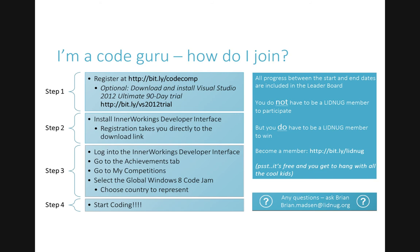Step one: register at bit.ly/codecomp. If you don't have Visual Studio, you can also download a trial at bit.ly/vs2012trial — that takes you to the Visual Studio 2012 Ultimate 90-day trial. This is a Windows 8 contest, so you'll need Windows 8 installed. Once you're ready to start, you'll be presented with the developer interface download from InnerWorkings. Download and install it, log in, go to the Achievements tab, select My Competitions, choose the Global Windows 8 Code Jam competition, choose the country you want to represent, and start coding.